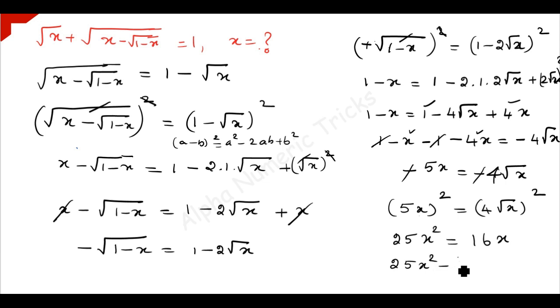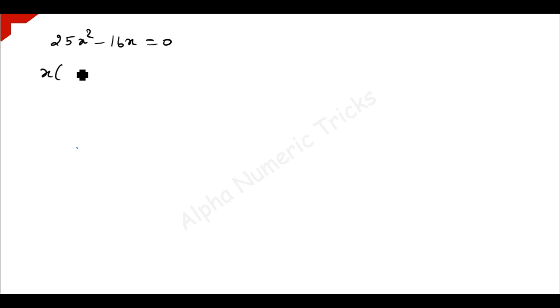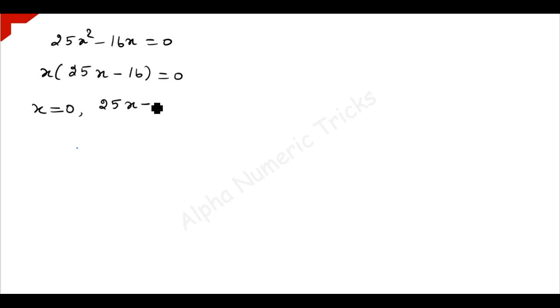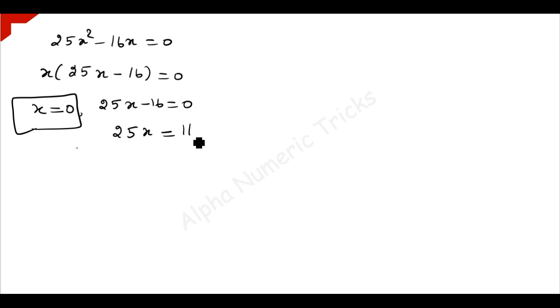So 25x² minus 16x is equal to 0. Taking x outside: x times (25x minus 16) is equal to 0. Since the product of two terms equals zero, at least one must be zero. So x is equal to 0, or 25x minus 16 equals 0, giving x is equal to 16 over 25.